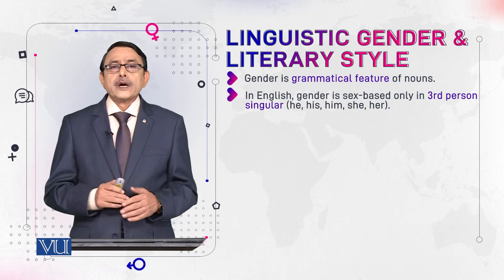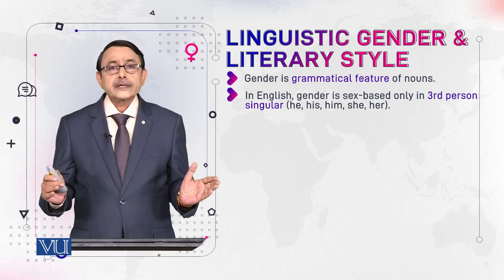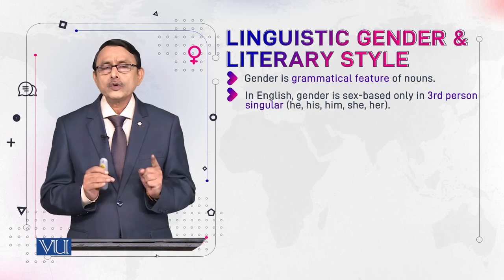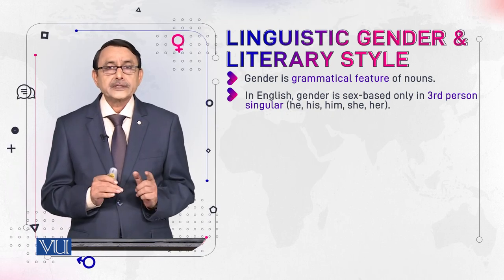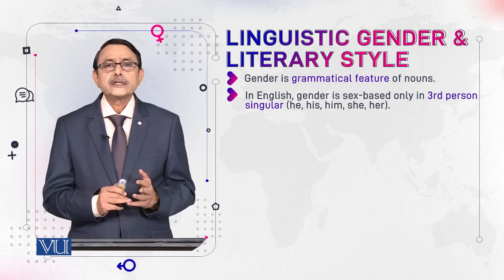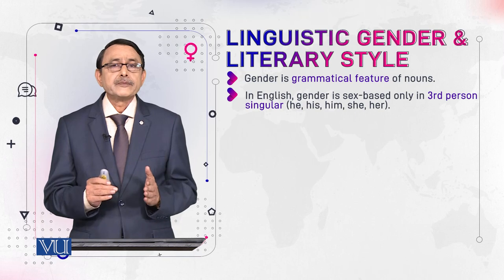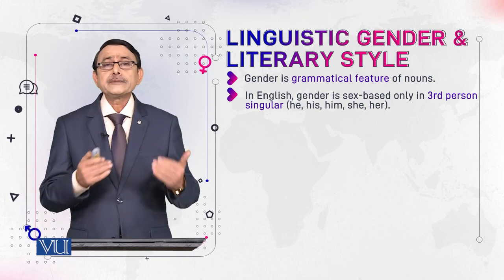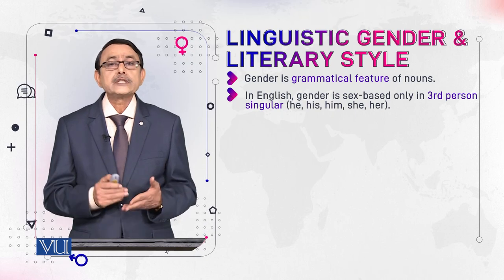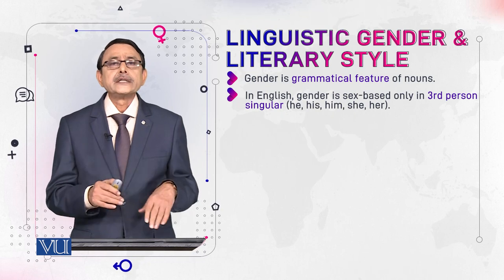In English, how do we define gender? We define gender in terms of sex. Here gender is sex-based and this difference is clearly seen only in the third person. We say 'he' is used for masculine, 'she' is used for feminine, and this difference between gender is based on sex. In the case of other persons — first person I and we, second person you, and even plural third person they — there is no relationship of gender with sex. They are sex-neutral.